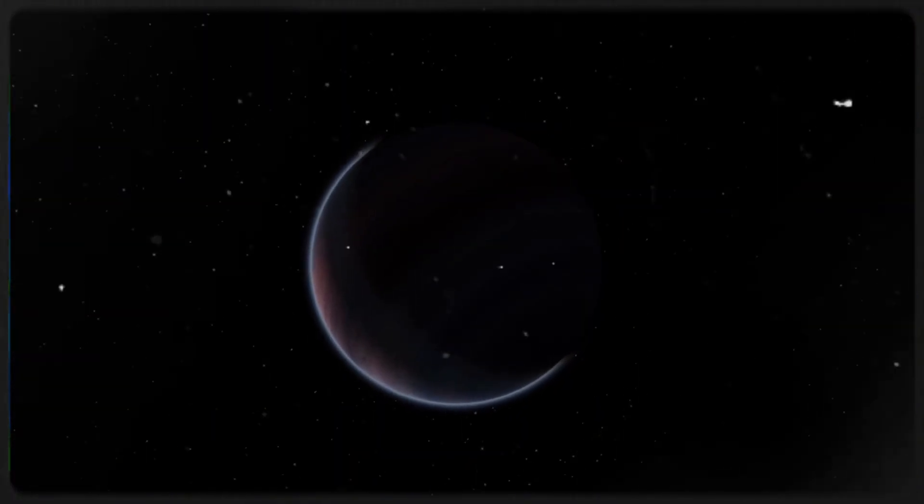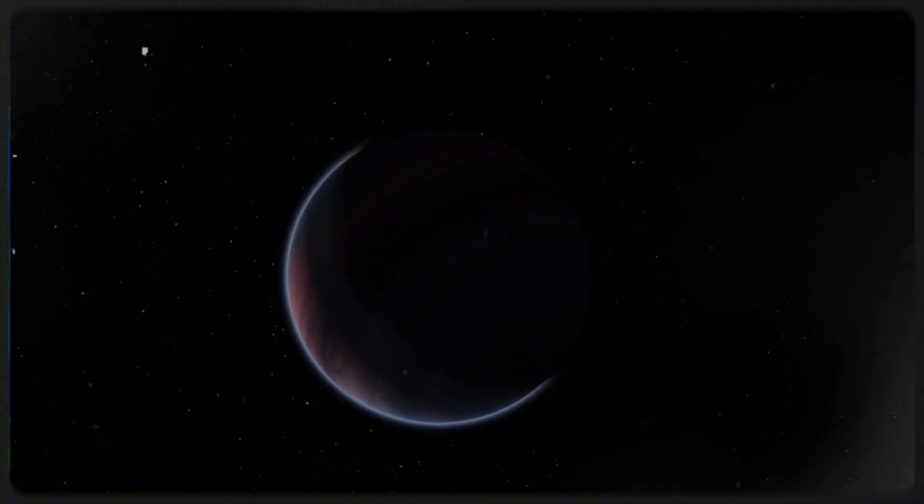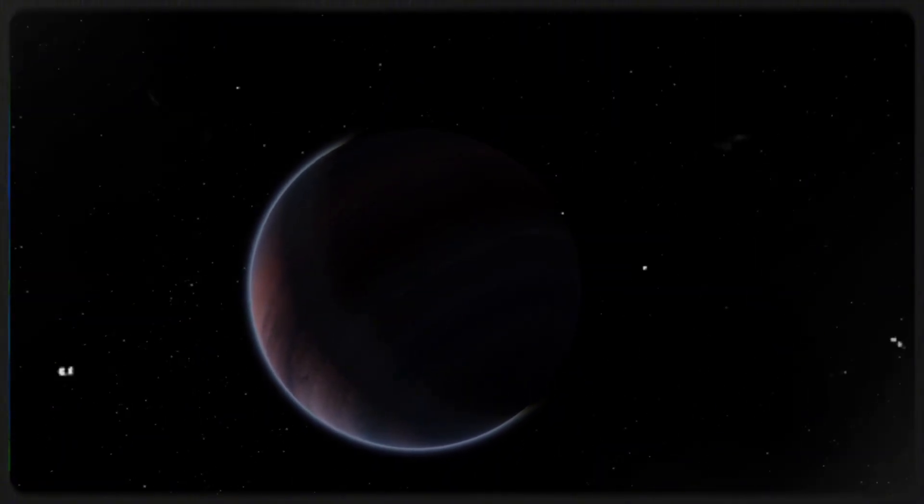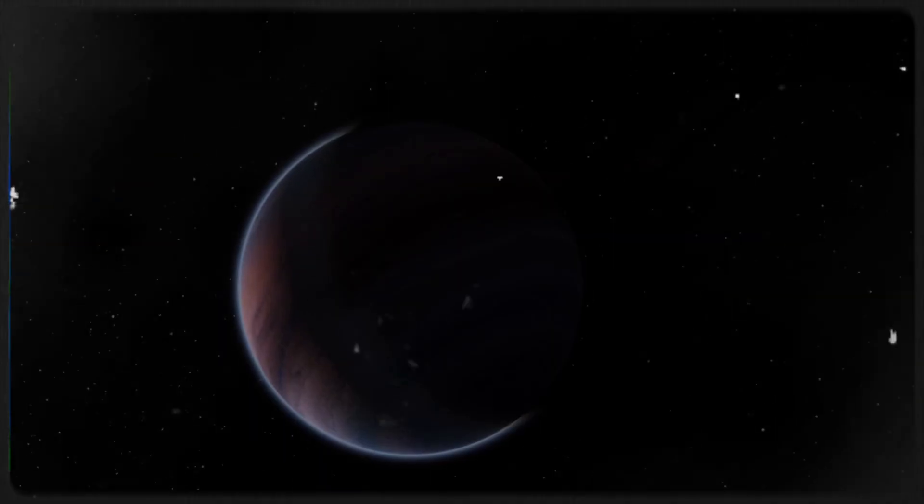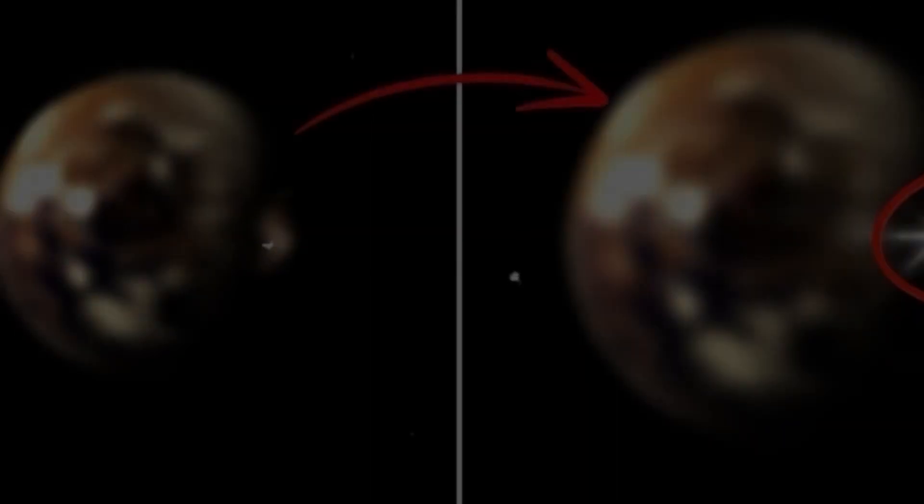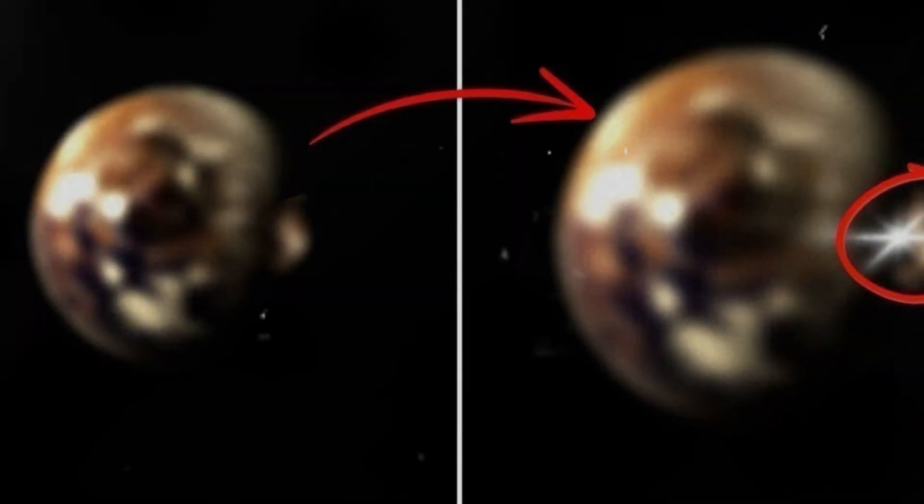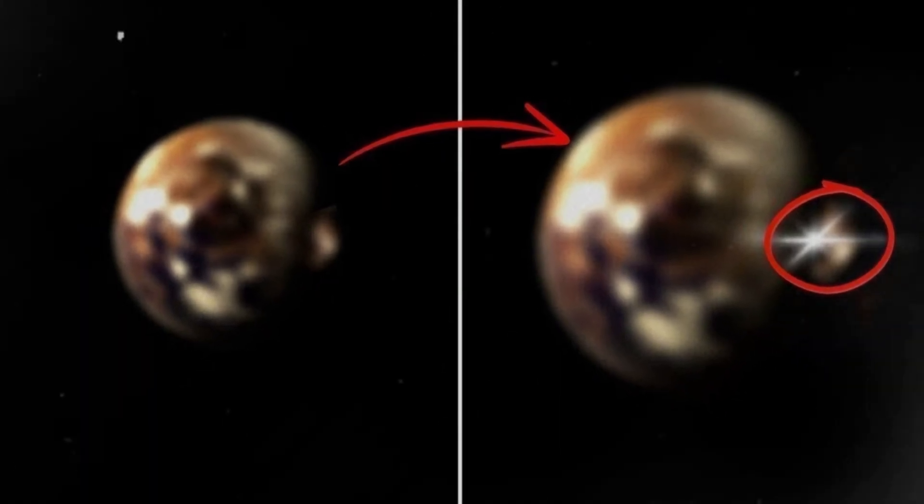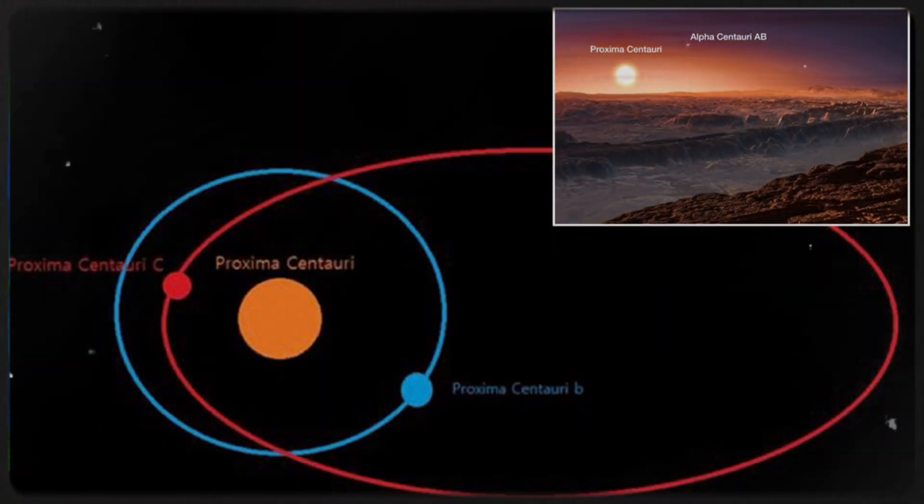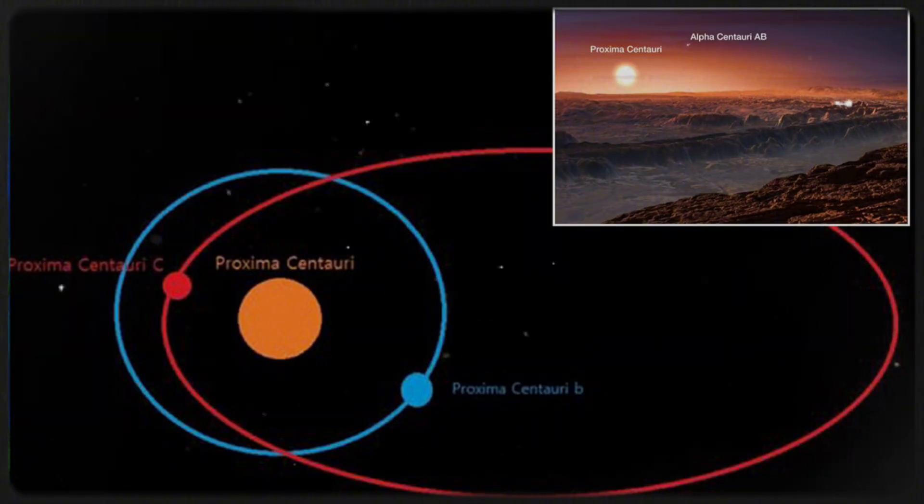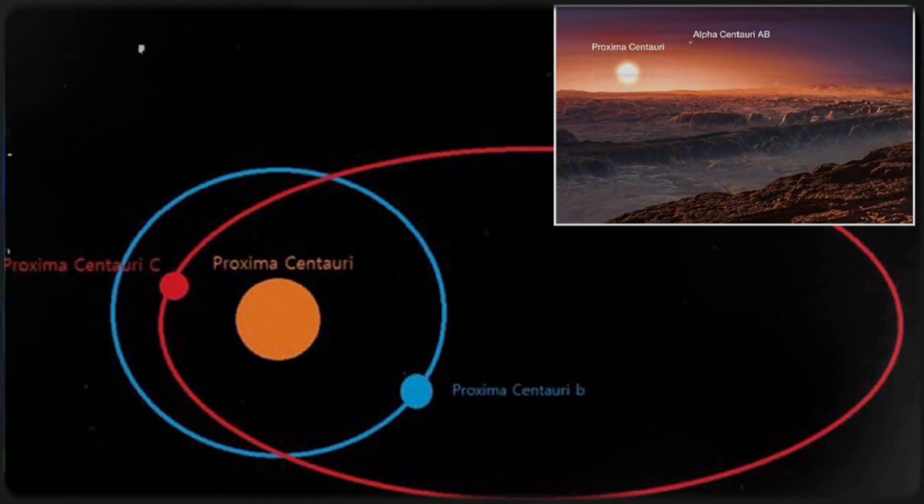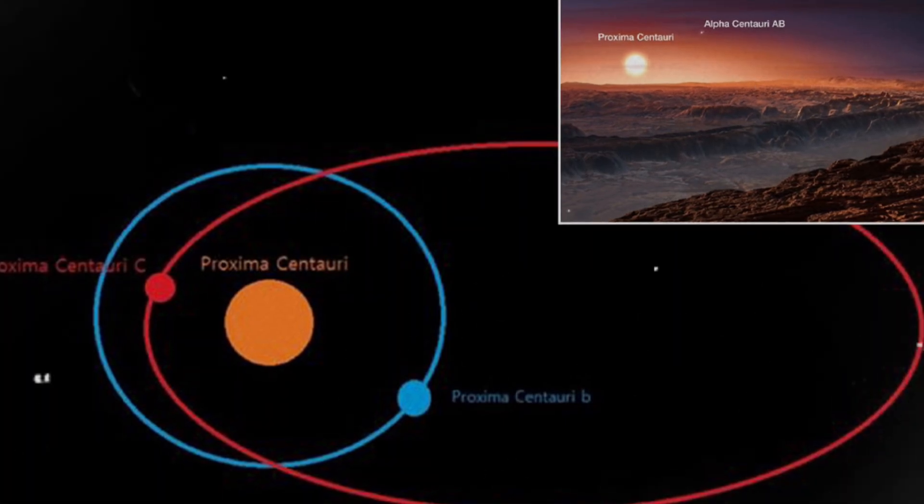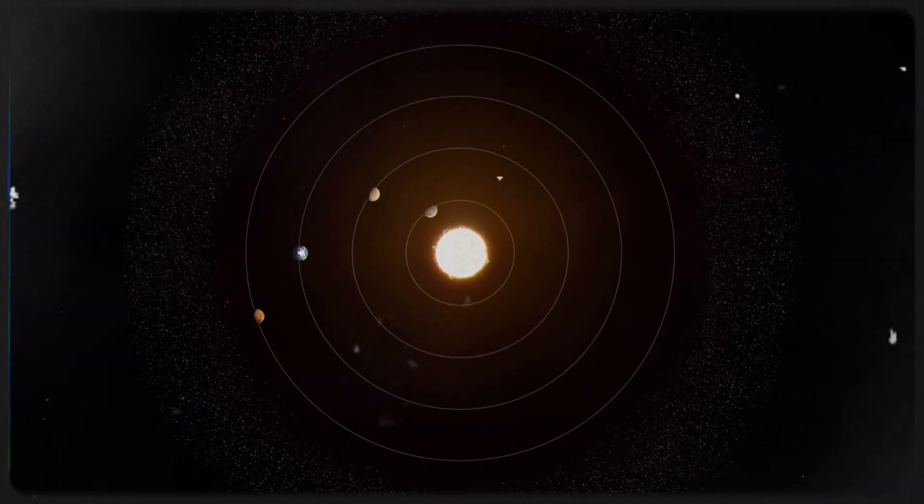Imagine a world where the sun never rises on one side while the other is bathed in unending light. Such extreme conditions create a hostile environment for potential life. The sunlit side would endure relentless radiation, while the dark side would be an icy wasteland. This raises a critical question: Could life possibly survive under such harsh circumstances? The odds may seem slim, yet nature has a history of defying expectations.